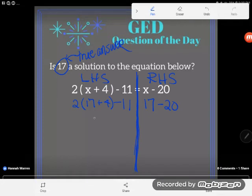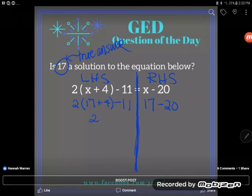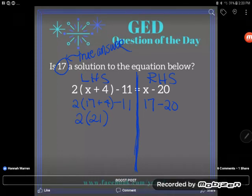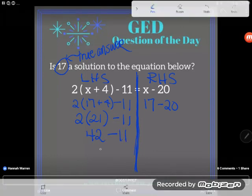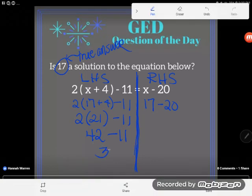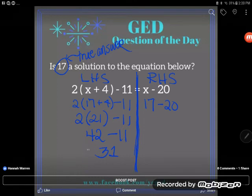Order of operations says I can start within my parentheses, so I'll do that grouping first. 17 plus 4 is 21. Drop what I haven't used up, and I'm working the left hand side as if it's a totally separate problem. Now I'll do my multiplication, and last I'll do my subtraction. On this side I get 31—42 minus 11 is 31.